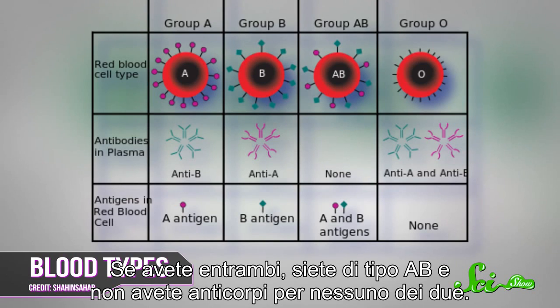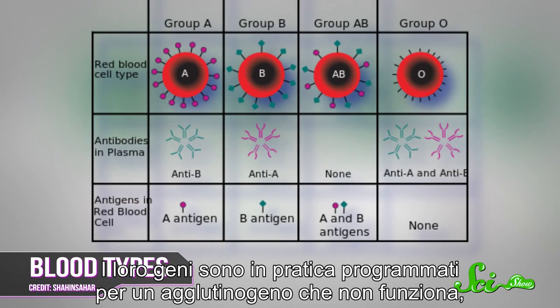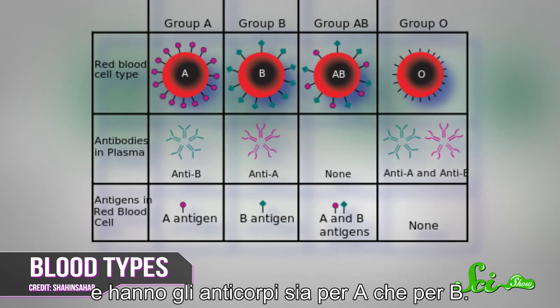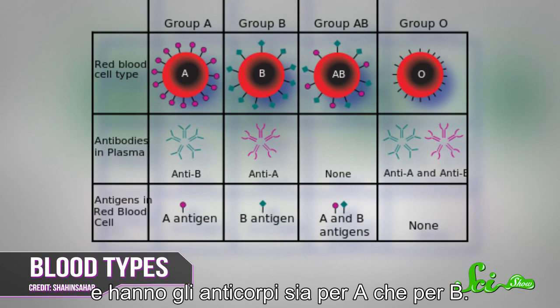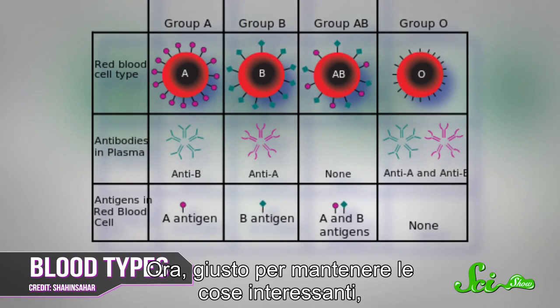If you have both, you're type AB, and you don't have antibodies for either. And some people have neither kind of antigen. Their genes actually code for an agglutinogen that just doesn't work, and they have antibodies for both A and B. These guys are called type O.